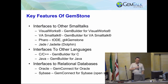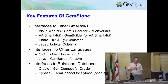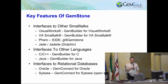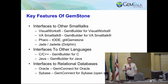GemStone interfaces to other Smalltalks — we've had these interfaces for quite some time. GemBuilder for VisualWorks, GemBuilder for VA. Pharo through TONEL and GT for GemStone. And Jade and Jadeite, which are Dolphin-based. We also have interfaces to other languages: a full C API for C and C++, a GemBuilder for Java interface which lets you talk to Smalltalk objects from a JVM, and interfaces to the relational databases Oracle and Sybase.